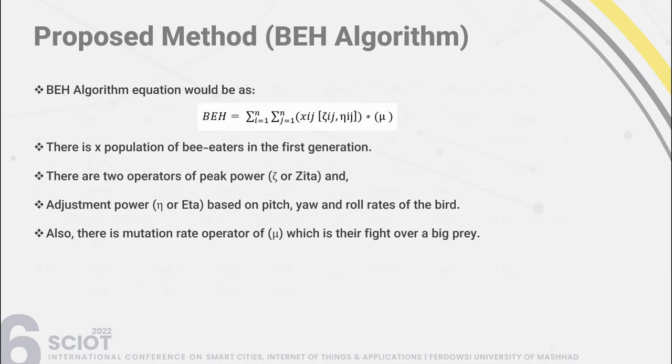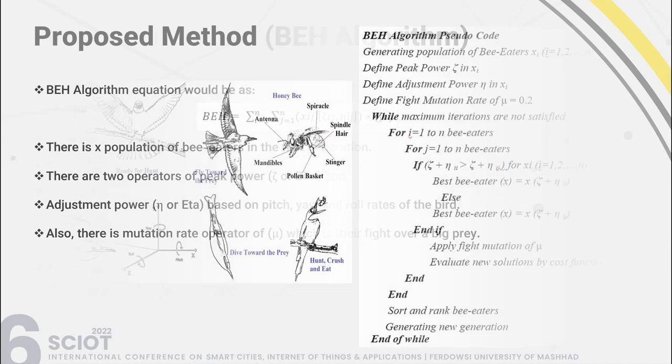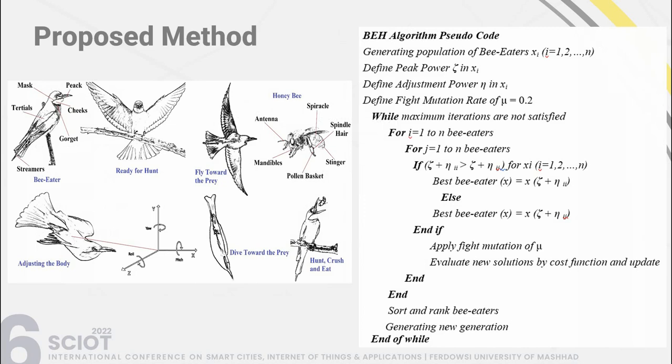The algorithm equations are as follows: there is a population X of bee eaters in the first generation. There are two operators: peak power zeta and adjustment power eta, based on pitch, yaw, and roll rate of the bird in the air. There is also a mutation rate mu representing their fight over big prey. As seen on the left, the characteristics of this bird and how it dives toward prey are shown, and on the right the pseudocode of the BEHA algorithm starts with generating a population X, defining peak power zeta, adjustment power eta, and mutation rate mu of 0.2.